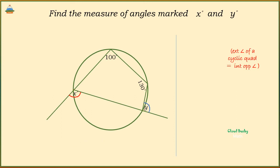Now, we are given two interior angles. Of these two, the one marked 130 degrees is opposite to angle X. That means angle X must be equal to 130 degrees.